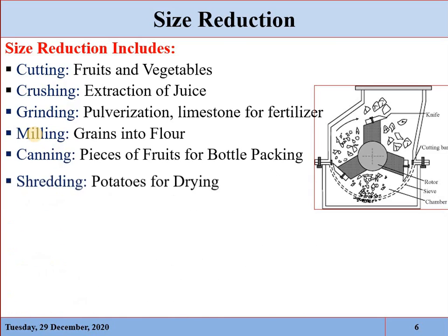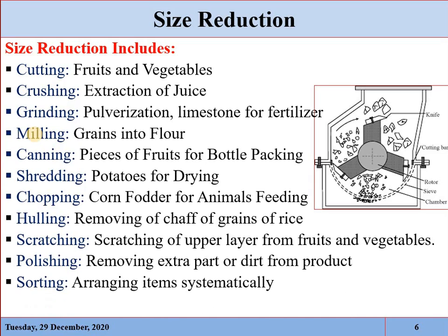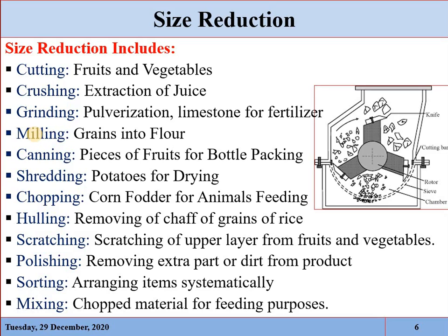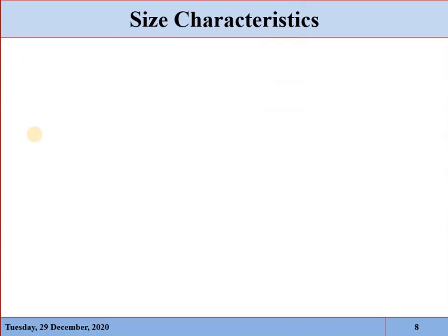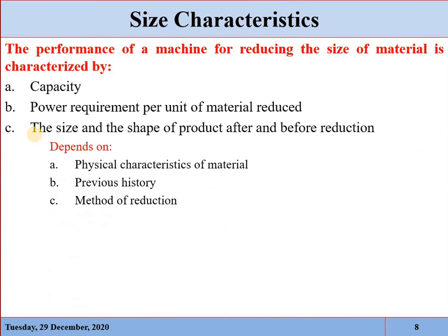We have also discussed that cutting, crushing, grinding, milling, canning, shredding, chopping, scratching, polishing, sorting, and mixing are different operations which can be termed as size reduction operations. We also discussed how to evaluate the performance of a machine that reduces the size of an agricultural product. Mainly, the performance of a machine depends on its capacity — how much product it is reducing and how much power is required to reduce the material.